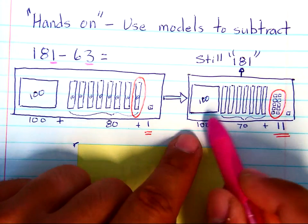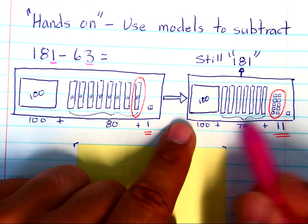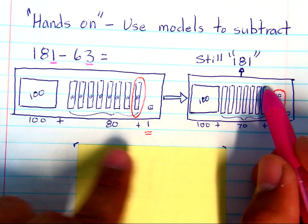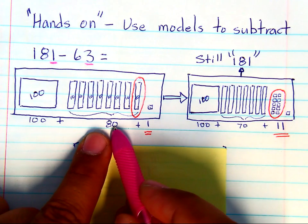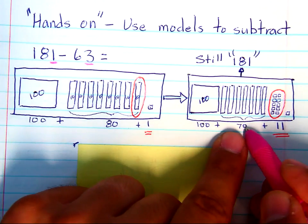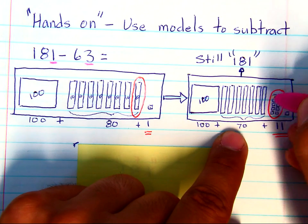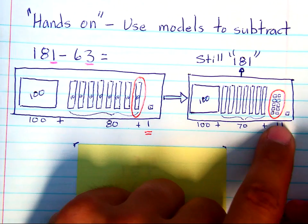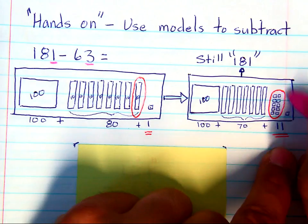So what we do is in class we take one of those tens, and notice how there's 8 tens here but 7 tens here. That's because we've taken one of those tens and have put it into the ones place.